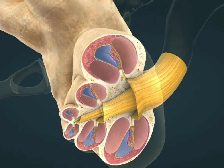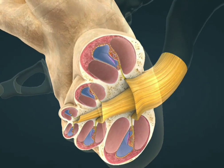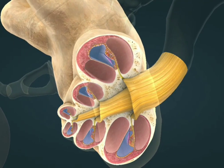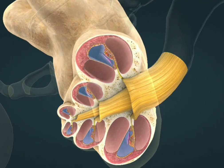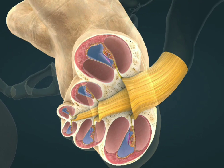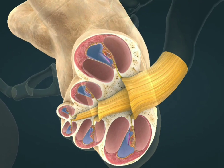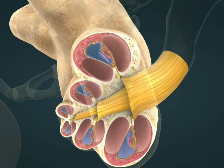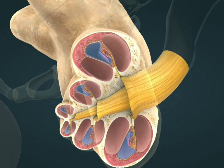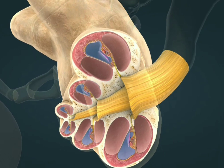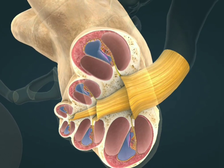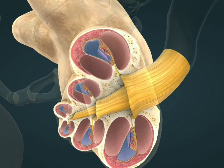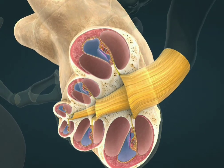The basilar membrane is located inside the cochlea. It runs along the tip of the cochlea, where it turns back and continues in Reissner's membrane. The membranes divide the cochlea longitudinally into three cavities: the scala tympani, the scala media, and the scala vestibuli.